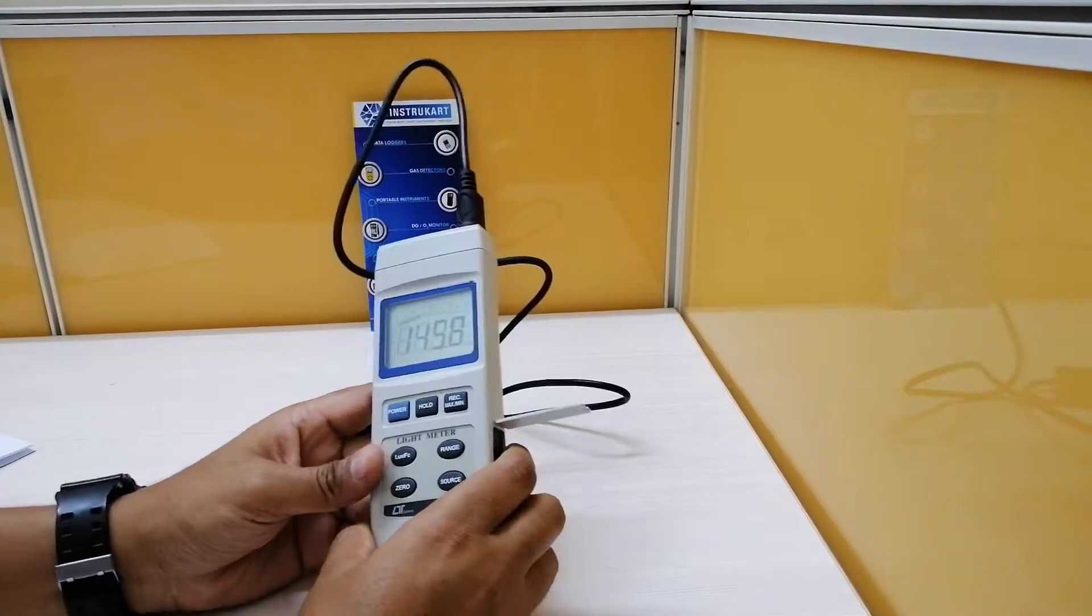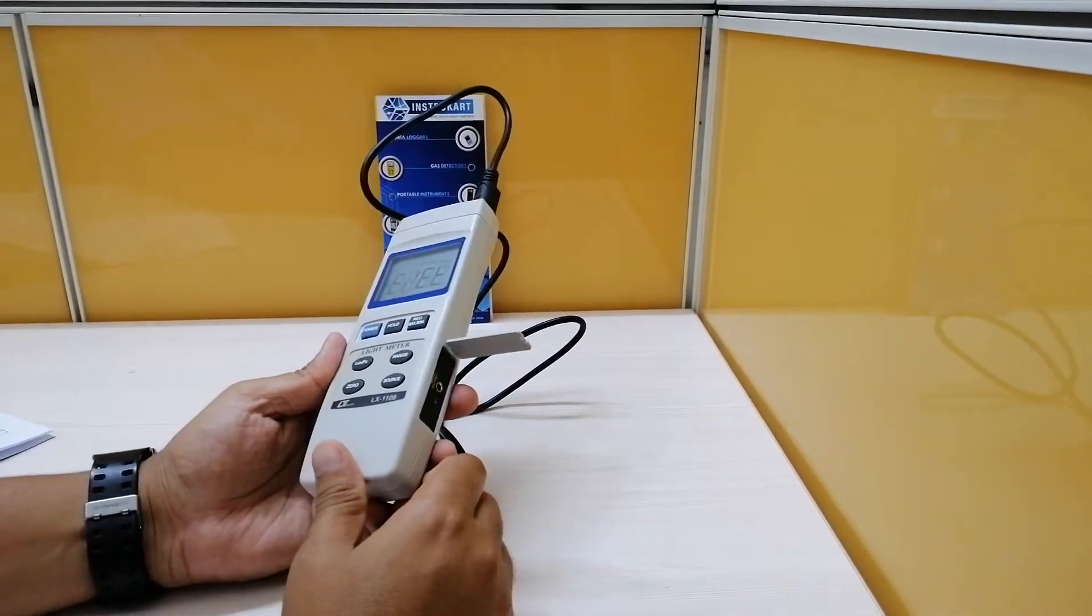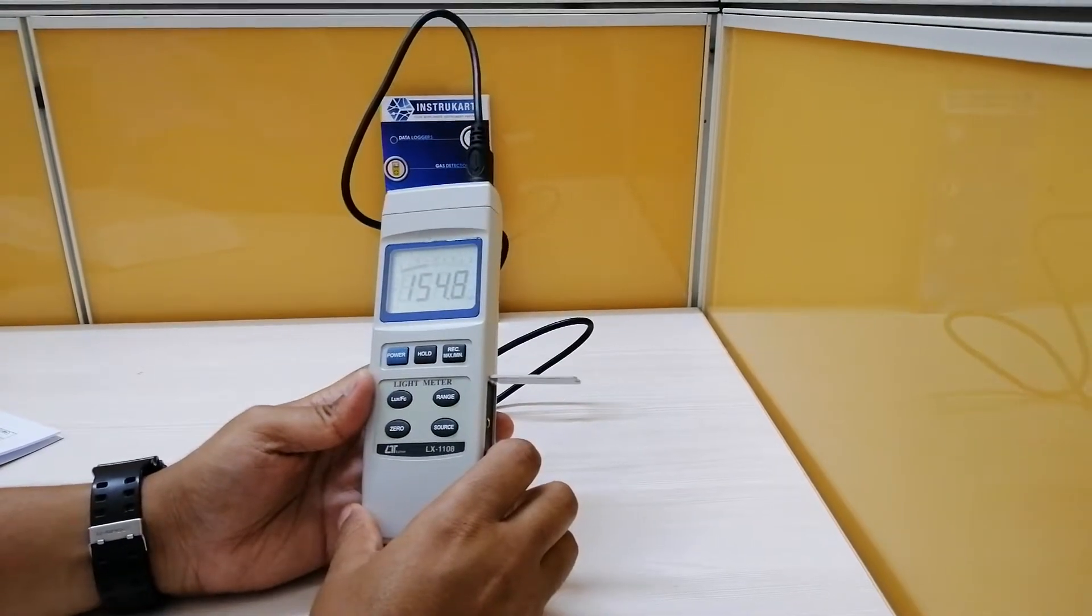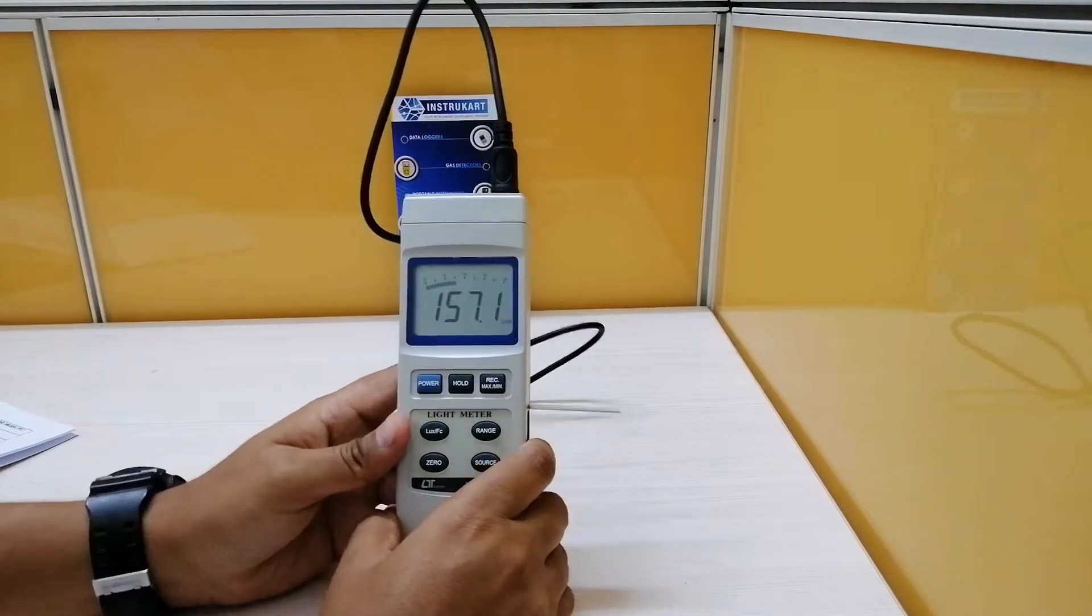This also has an over and under range indicator, which will tell you whether this is going out of bound or inside the range.